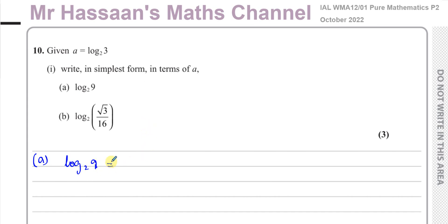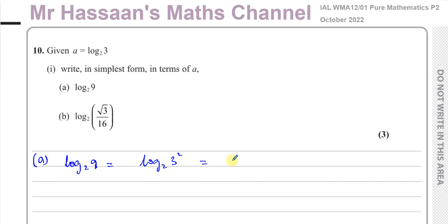We know that 9 can be written as 3 times 3, or 3 squared. So you can say log to the base 2 of 9 is log to the base 2 of 3 squared. And then we can use the power law in logarithms to write this as 2 times log to the base 2 of 3.